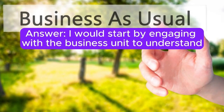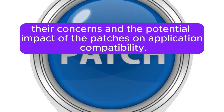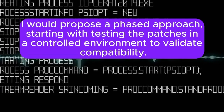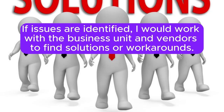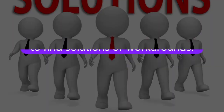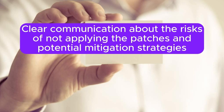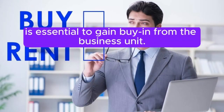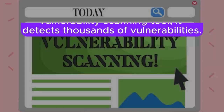Scenario 13 answer: I would propose a phased approach, starting with testing the patches in a controlled environment to validate compatibility. If issues are identified, I would work with the business unit and vendors to find solutions or workarounds. Clear communication about the risks of not applying the patches and potential mitigation strategies is essential to gain buy-in from the business unit.